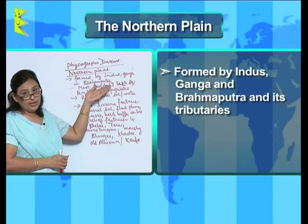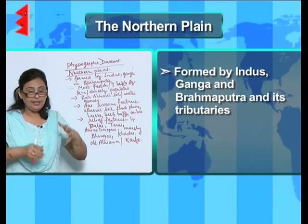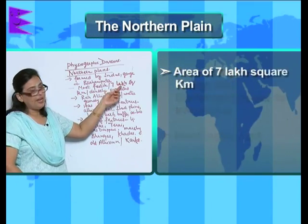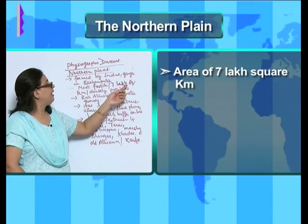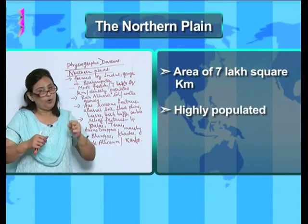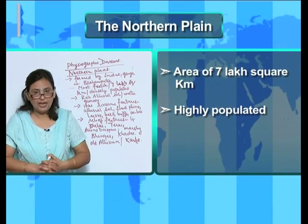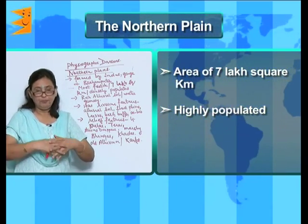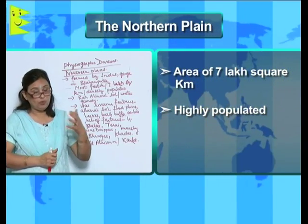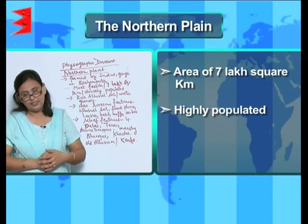This land, formed by big rivers, is the most fertile land. It has an area of nearly 7 lakh square kilometers and is highly and densely populated, for the simple reason that the soil is very fertile, agriculture can be done easily, it is the most developed part, and work is easily available.